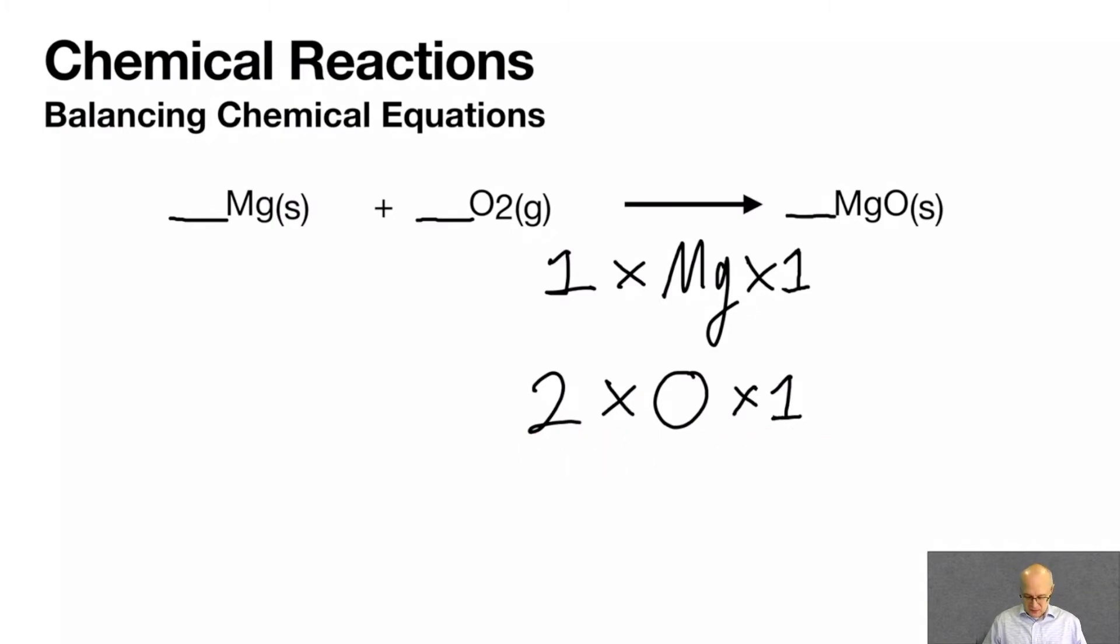How do we do that? Well, simple. We put the number 2 right there. That changes this to a 2. And changes this. And the magnesiums are out of balance.